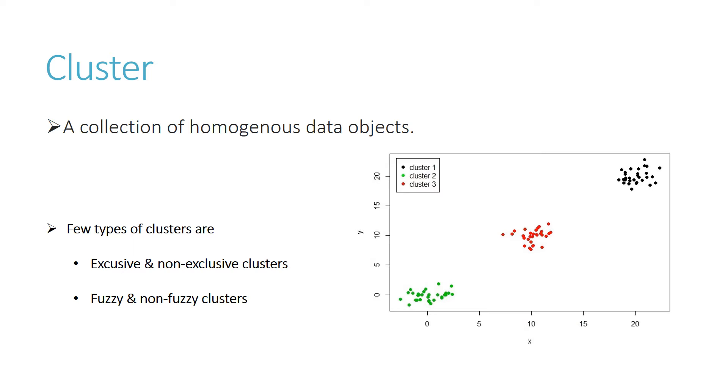A cluster is a collection of objects which are similar between them and are dissimilar to objects belonging to other clusters. Few types are exclusive and non-exclusive clusters. In non-exclusive clusters, points may belong to multiple clusters. Next is fuzzy and non-fuzzy clusters. In fuzzy clusters, a point belongs to every cluster with some weight between 0 and 1, where the total weight must sum to 1.